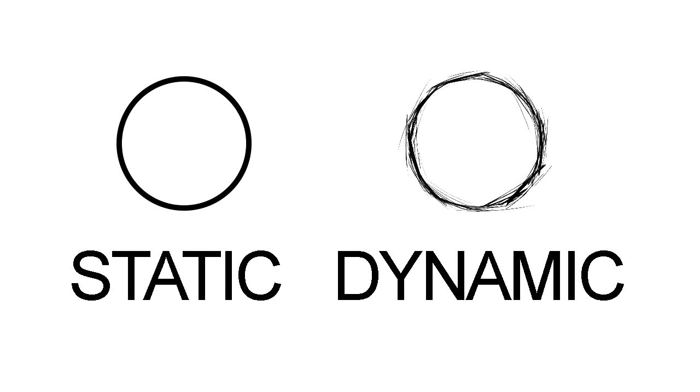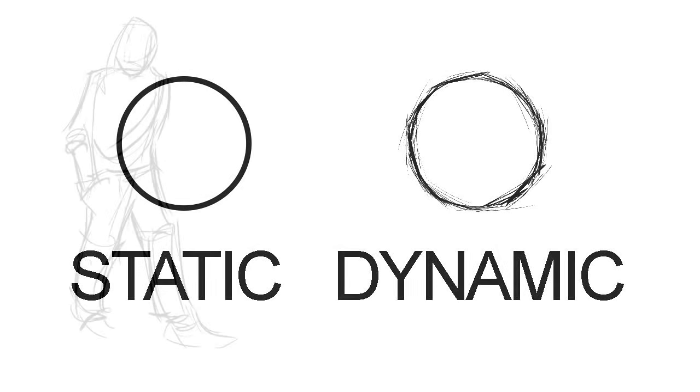A line that's just put on the paper without any interest or variance is a static line. But we can make lines much more interesting by loosening up a bit and creating dynamic lines. Dynamic marks can still serve their purpose by defining the boundaries of objects, but they're usually more interesting simply because they're more dynamic.